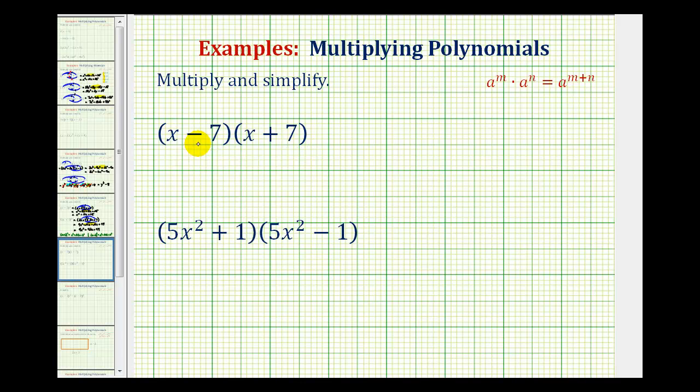If we take a look at the two binomials, notice how one is x minus seven, and the other is x plus seven. In the second example, we have five x squared plus one, and five x squared minus one.